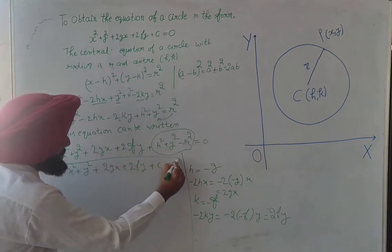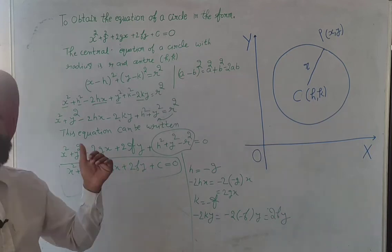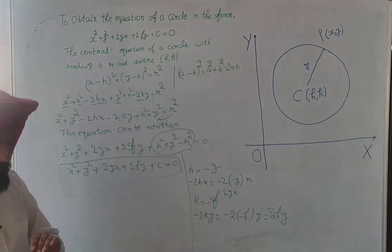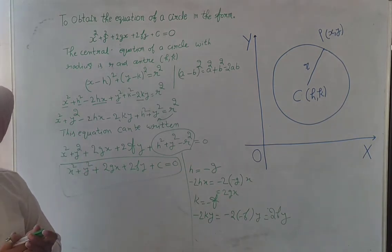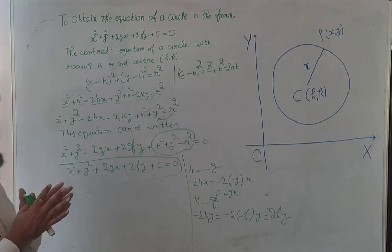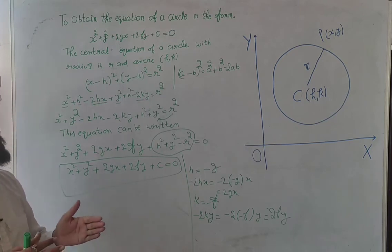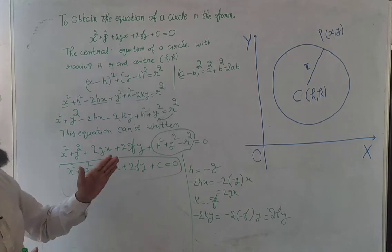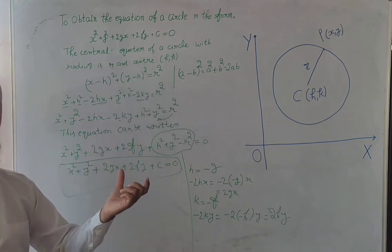So the new equation with center h and k is x square plus y square plus 2gx plus 2fy plus c equal to zero. I hope this topic is clear. If you like this video, please like, share, and subscribe to the channel for watching more videos.